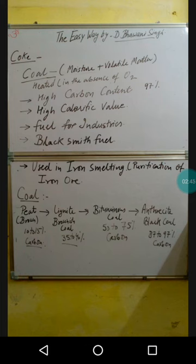Next, we will discuss coal. Basically, 300 million years back, all of the vegetation — by natural forces like floods and tsunamis — got buried under the ground. Over a long period of time, all this vegetation got converted into coal. The first form of coal is called peat coal, which is generally brown in color. Because it forms under low pressure and low temperature, its carbonification is less — it contains only 10 to 15 percent carbon.